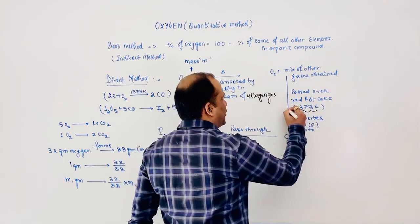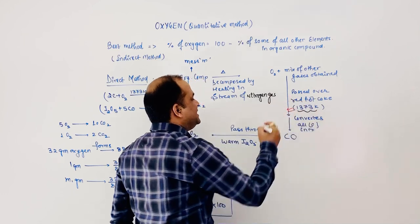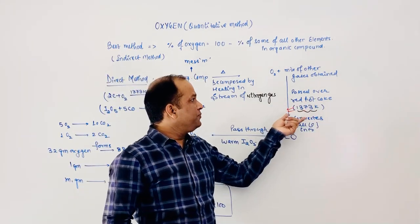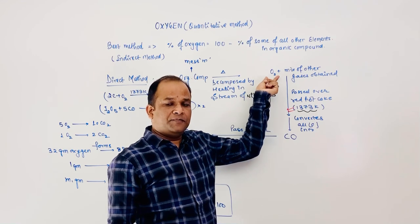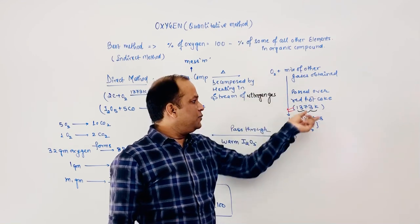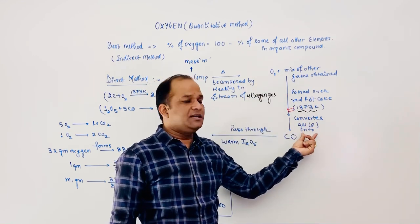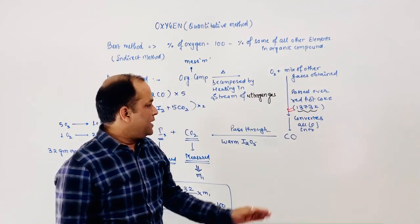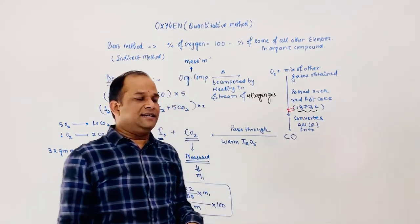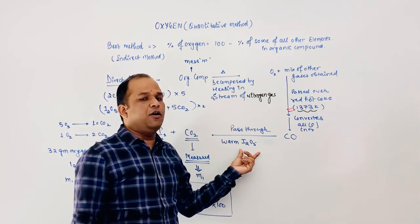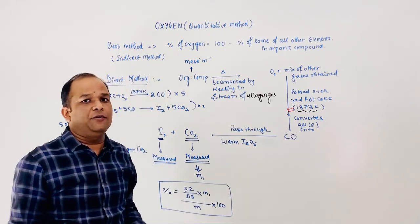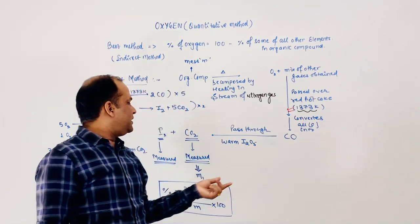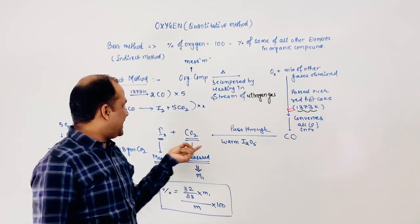When this mixture of gaseous substances along with oxygen is passed over red hot coke at a temperature of 1373K, the red hot coke reacts with oxygen and converts all the oxygen present in the mixture into carbon monoxide (CO).